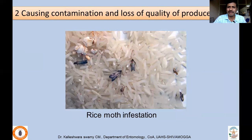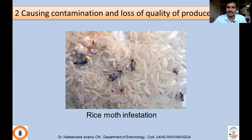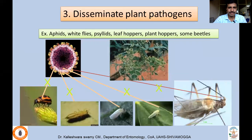Another indirect damage is contamination. Rice moth, for example — the feeding activity and the large quantities of excreta released actually contaminate the produce. This leads to quality reduction because of insect presence in the particular product.